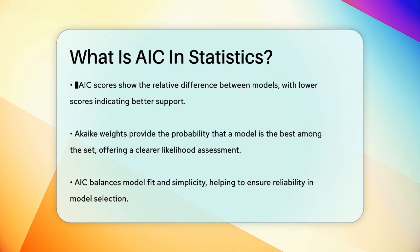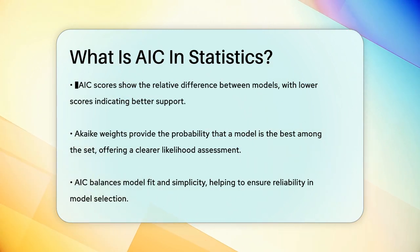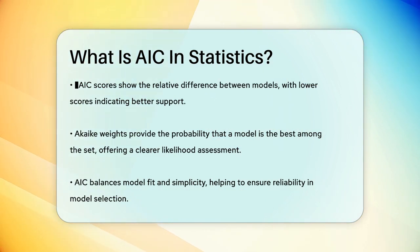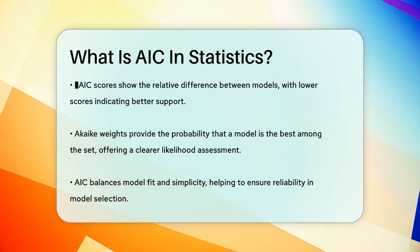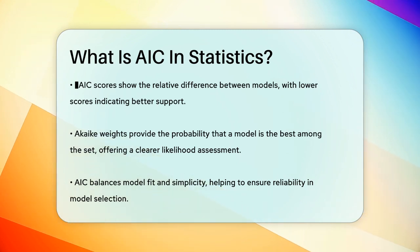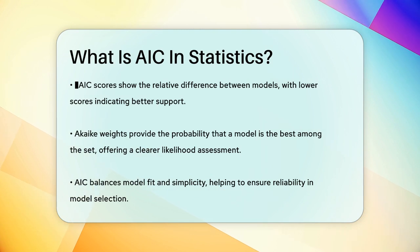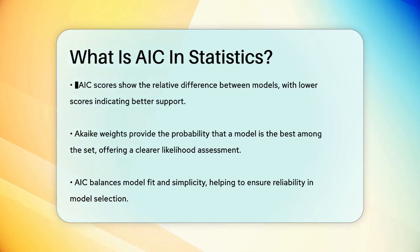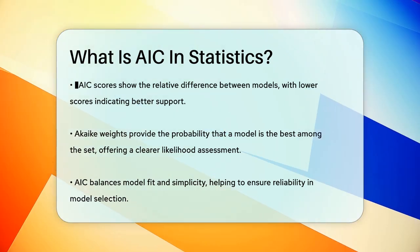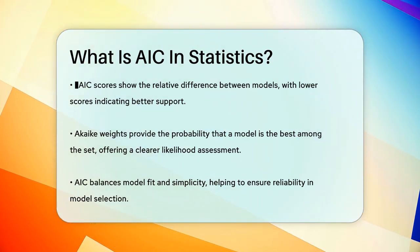Another way to interpret AIC is through Akaike weights, which give you the probability that a model is the best among the set. This can be a bit more complicated to calculate, but provides a clear idea of each model's likelihood of being the best. In summary, AIC is a powerful tool for selecting the best statistical model by balancing goodness of fit and model simplicity. It helps you avoid overfitting and ensures that you're working with the most reliable model for your data.